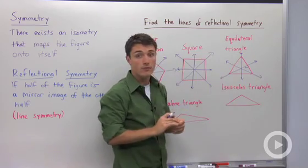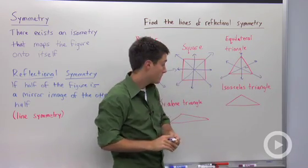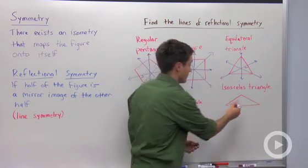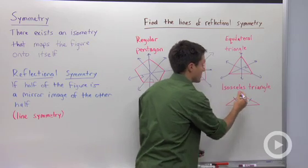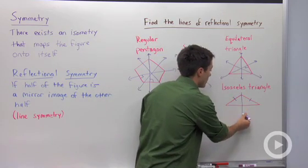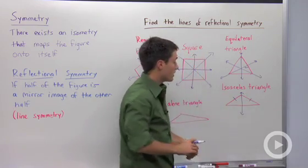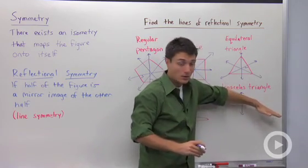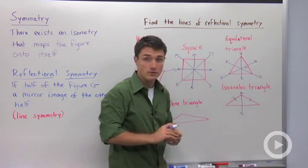So an equilateral triangle will have three lines of reflectional symmetry. If we look at an isosceles triangle, if I label these two sides as being congruent, there's only one line of symmetry. Because if I drew in another line here, it would not be a mirror image of itself.